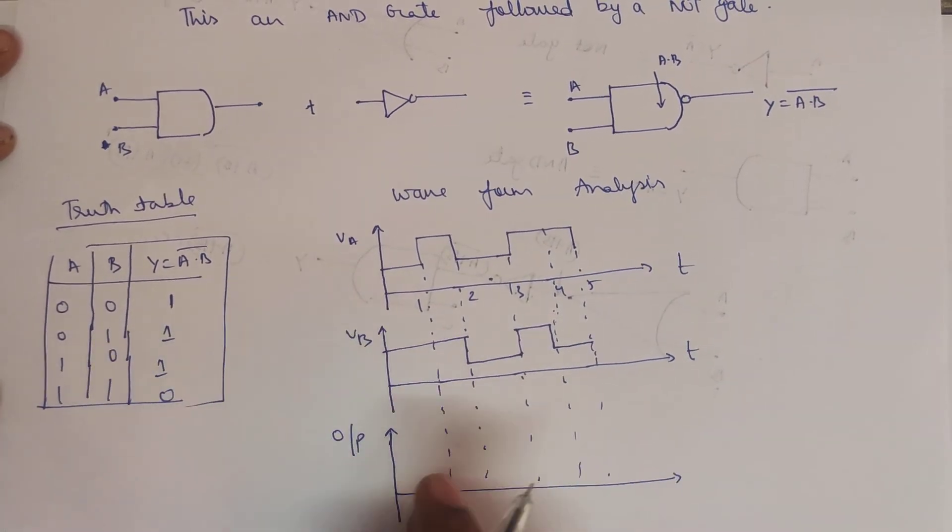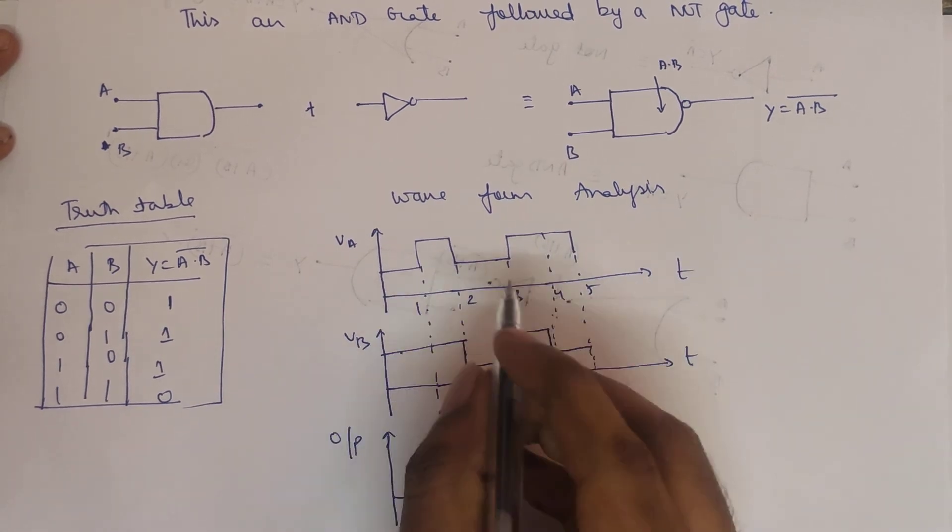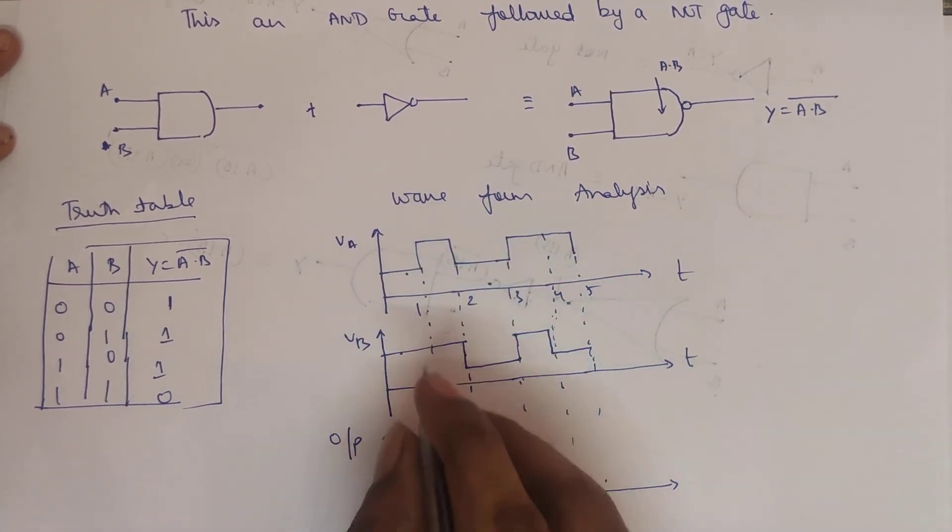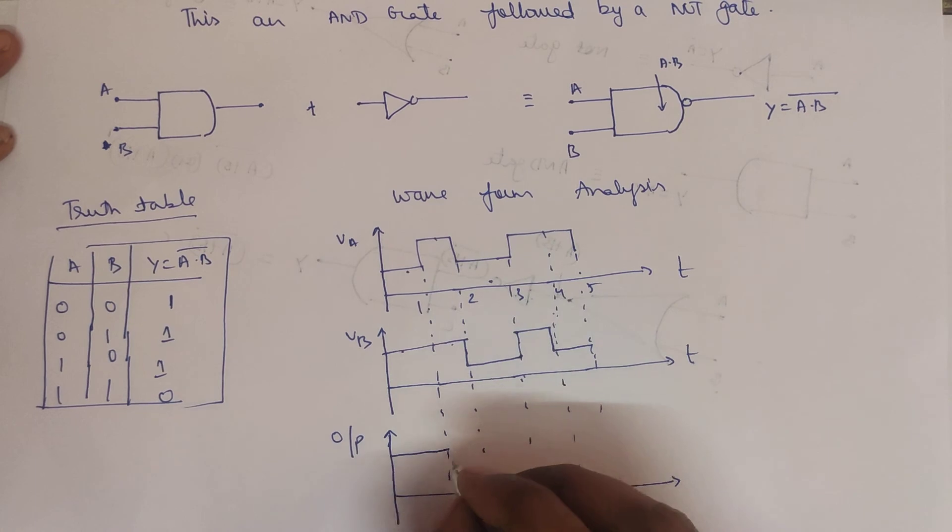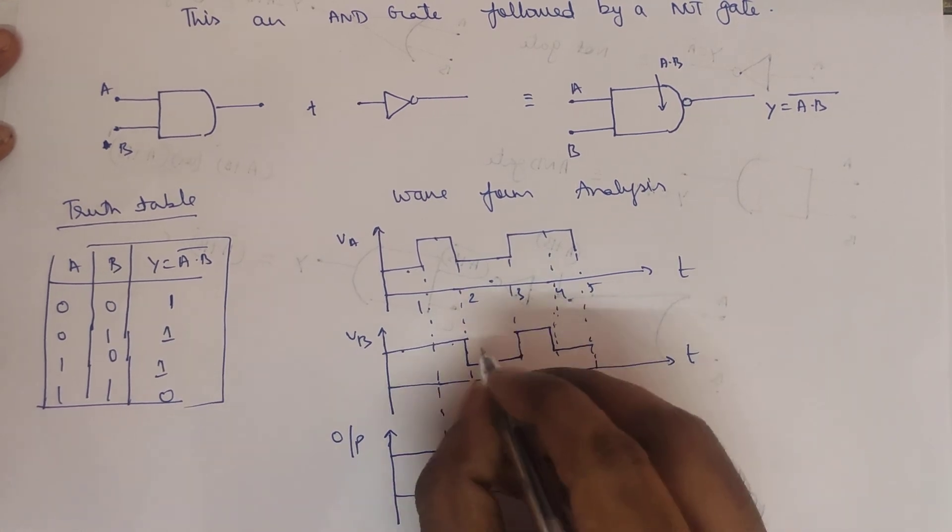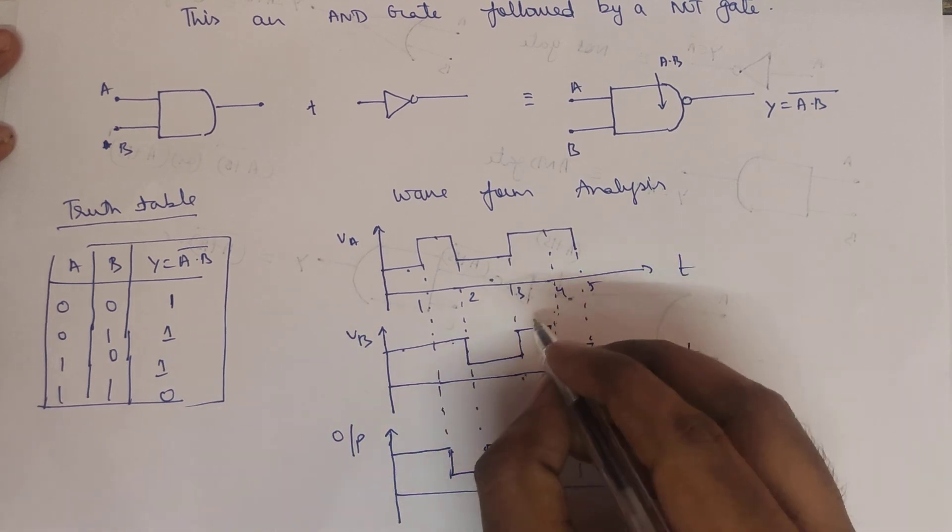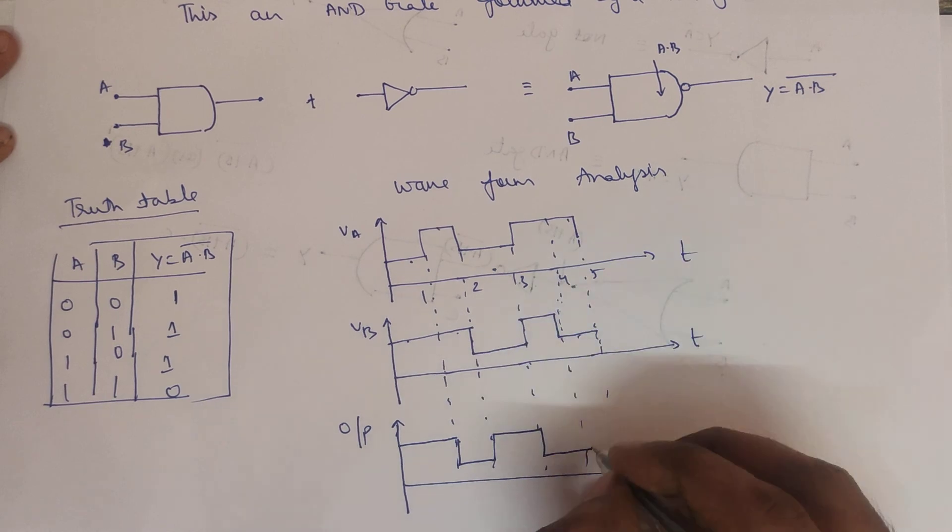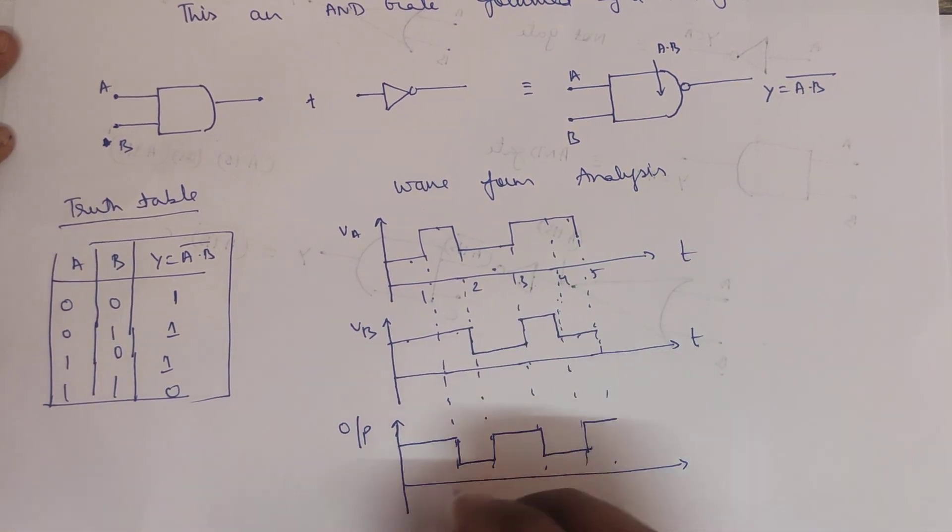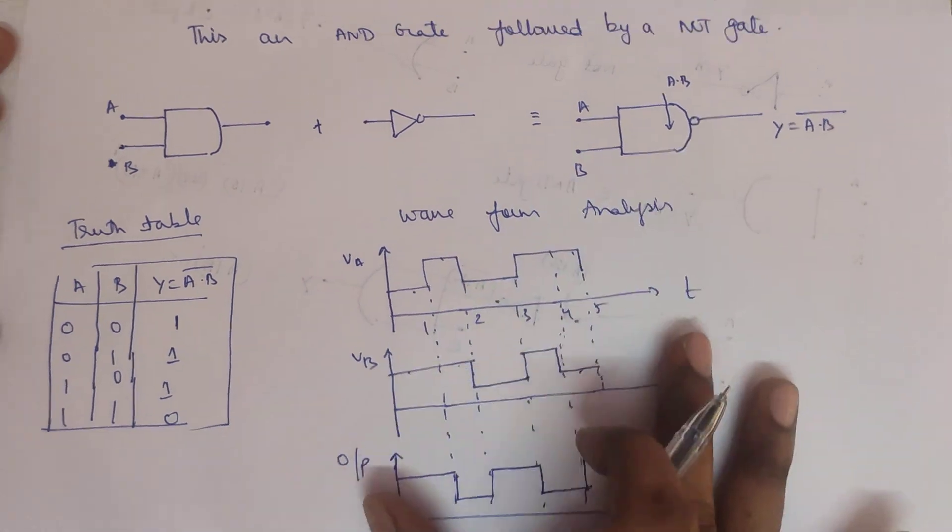We have two maximum inputs and output will be zero. Then we have two zeros, so it is one. Then two zeros, so again we will get maximum. Then maximum maximum, so that becomes zero. Then minimum minimum, so that is maximum. Then maximum maximum, that becomes zero. Then maximum minimum, again that becomes maximum. So this would be the output waveform for NAND gate.